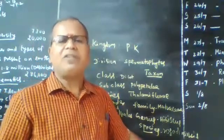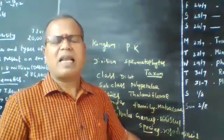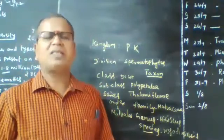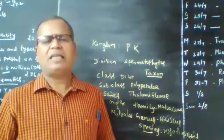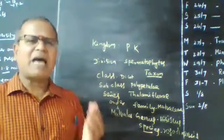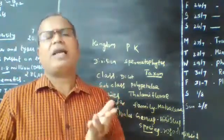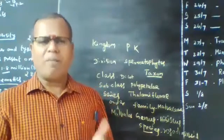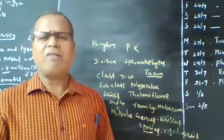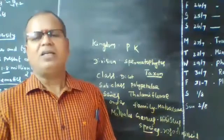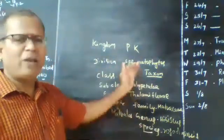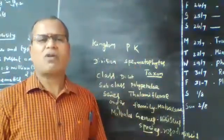To recap the taxonomic hierarchy for Hibiscus: Kingdom — Plant Kingdom; Division — Spermatophyta (seeded plants); Class — Dicotyledonae (embryo with two cotyledons); Subclass — Polypetalae (petals are free); Series — Thalamiflorae (prominent thalamus; the receptacle or torus on which flowers are arranged; hypogynous flower meaning superior ovary); Order — Malvales (presence of epipetalous stamens, monodelphous stamens); Family — Malvaceae; Genus — Hibiscus; Species — rosa-sinensis.